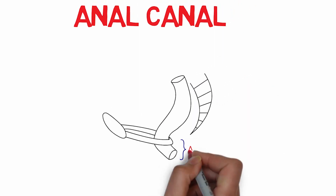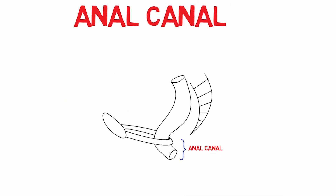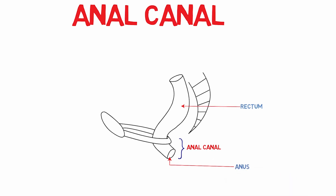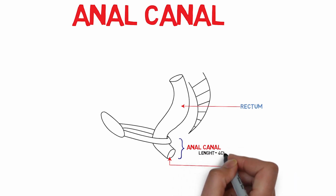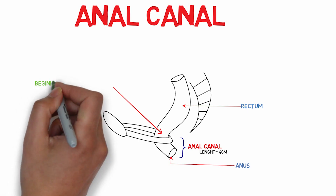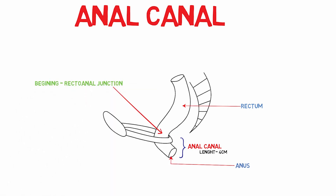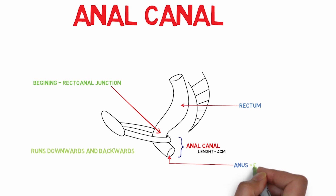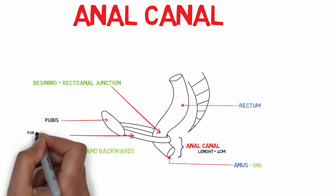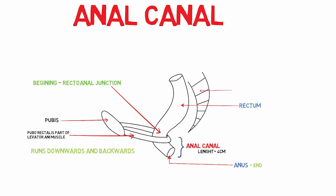The anal canal is the terminal segment of the large intestine. It is the part situated between the rectum and anus and is nearly 4 centimeters in length. It begins at the rectoanal junction, then runs downwards and backwards, and ends at the anal orifice. Important relations of the anal canal include the pubis, puborectalis part of the levator ani, and the coccyx.